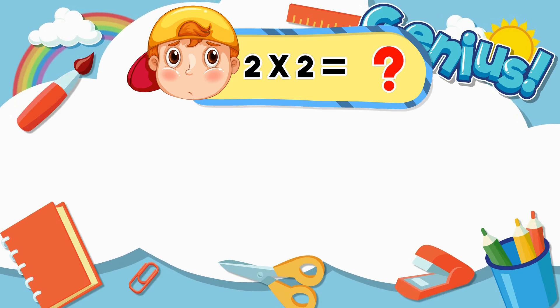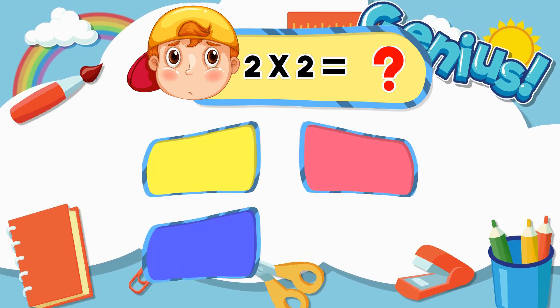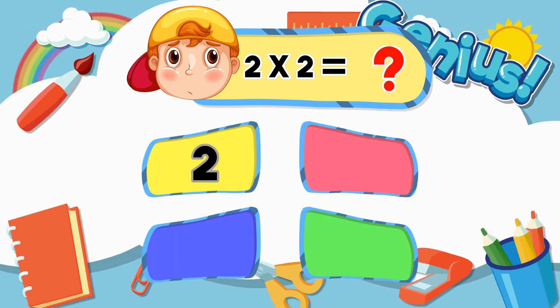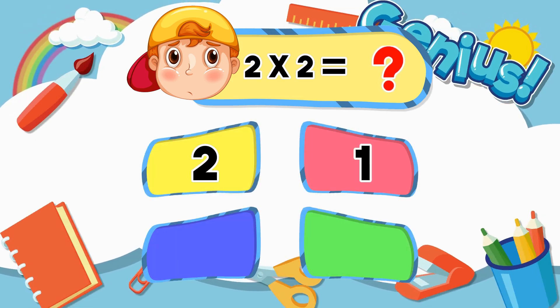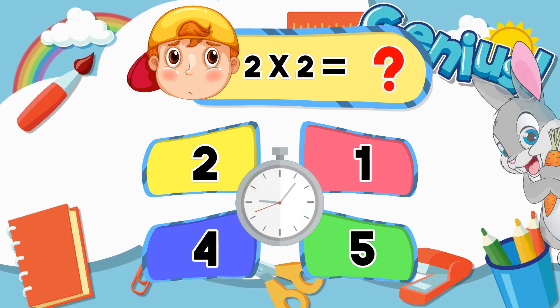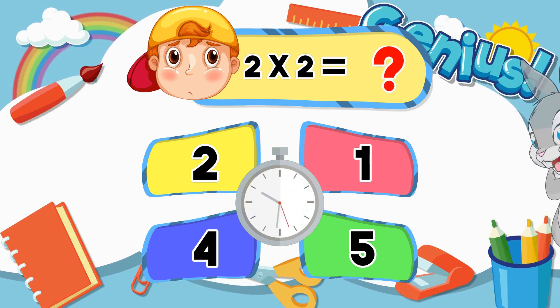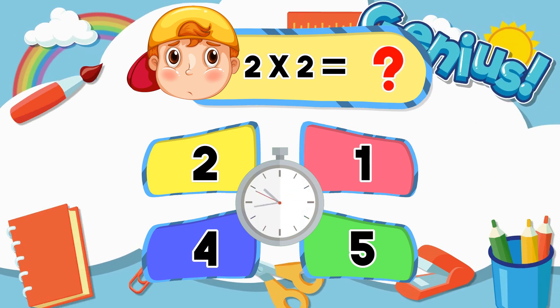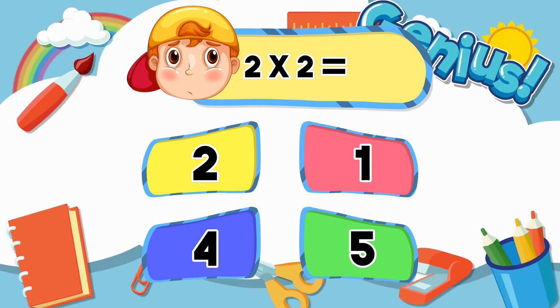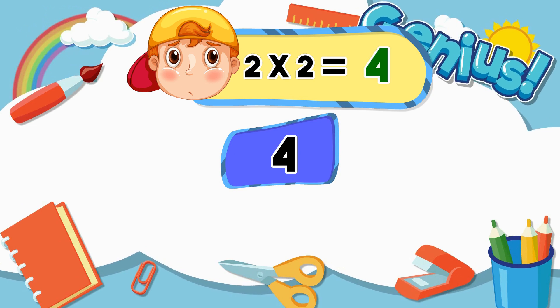What is 2 times 2? 2, 1, 4, 5. [Answer:] 4.